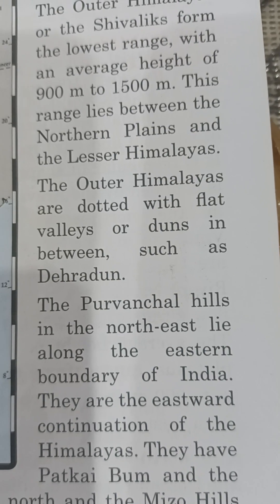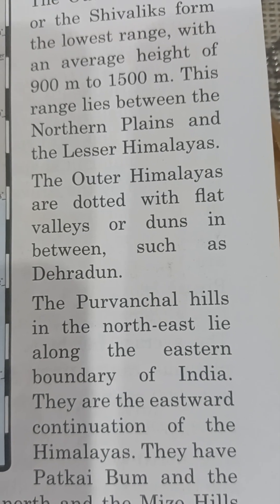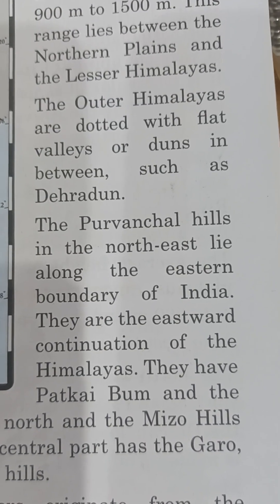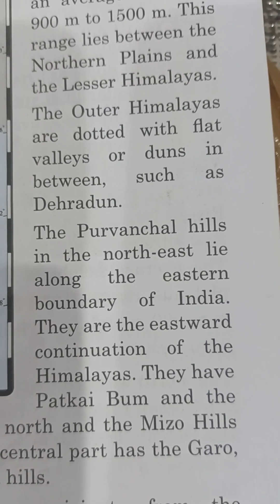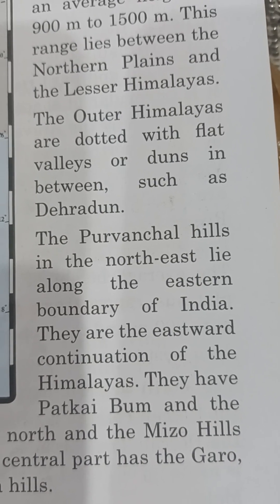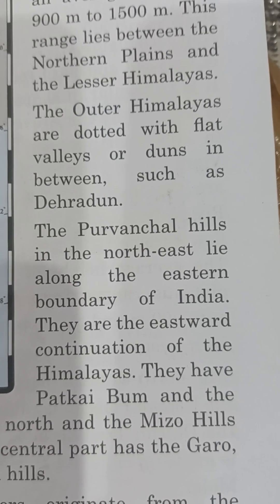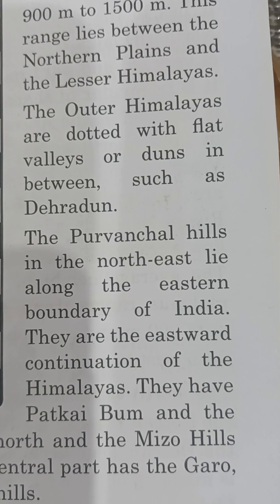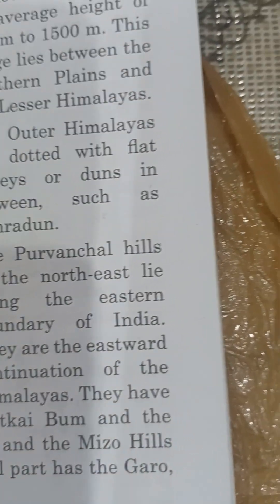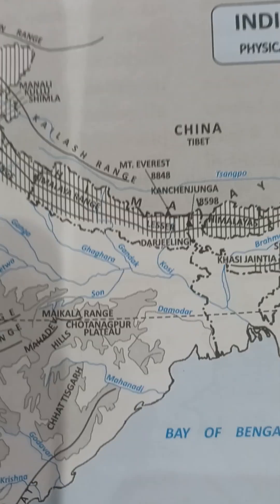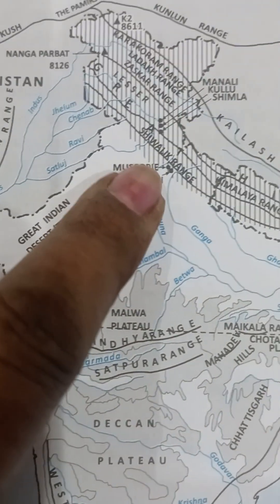The Shivalic range lies between the northern plains and the Lesser Himalayas. The outer Himalayas are dotted with flat valleys in between, such as Dehradun. On the physical map, these flat valley areas are shown with dots, and the Shivalic range is clearly visible near the Dehradun region.